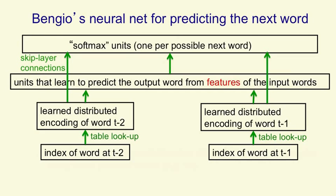One extra refinement that makes it work better is to use skip layer connections that go straight from the input words to the output words because the individual input words are individually quite informative about what the output word might be. Bengio's model was actually slightly worse than trigrams at predicting the next word but it was in the same ballpark, and if you combined it with trigrams it improved things. Since then these language models that use feature vectors for words have been improved considerably and they're now considerably better than trigram models.